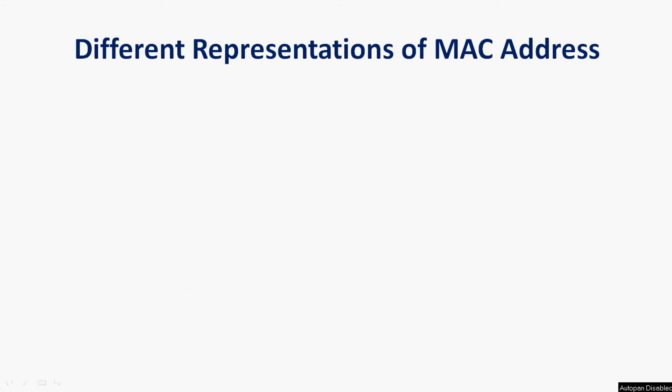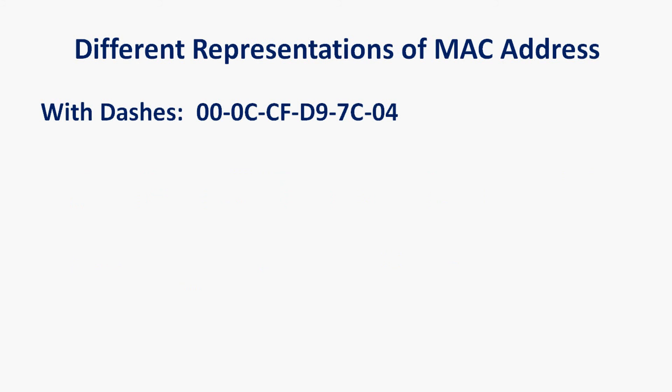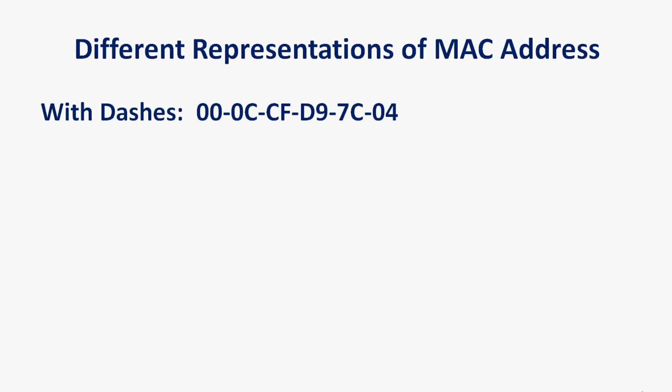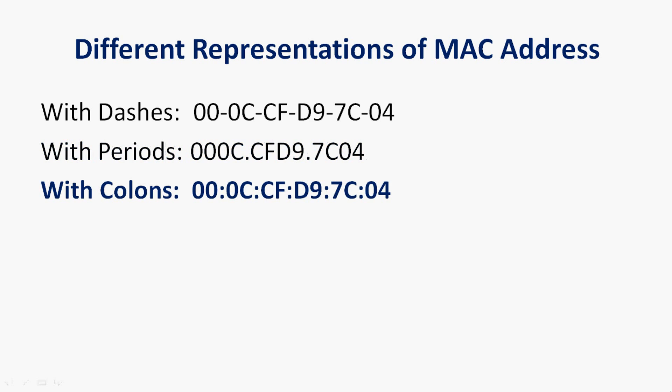Now we will see different representations of MAC addresses. First, with dashes: 00-0C-CF-D9-7C-04. The same MAC address can be represented using periods: 000C.CFD9.7C04. Also we can represent a MAC address using colons: 00:0C:CF:D9:7C:04.